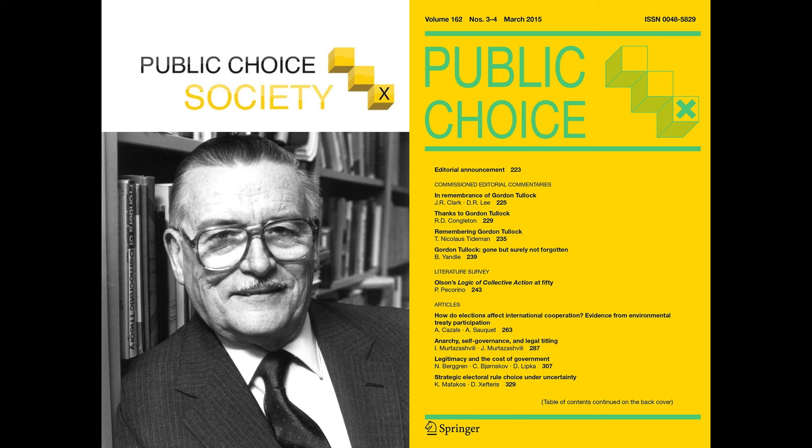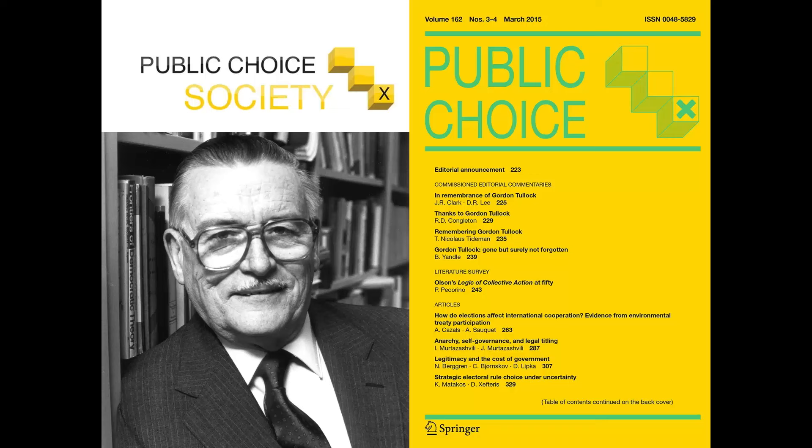In 1969, Buchanan and Tullock, along with former Buchanan student Charles Goetz, relocated to Virginia Tech and established the Center for Study of Public Choice. While others had used the tools of economics to analyze political processes previously, Buchanan's entrepreneurship established Public Choice as a well-recognized research program.